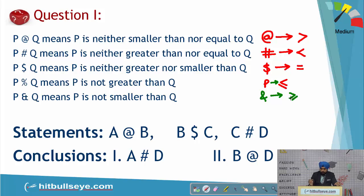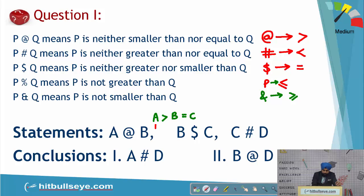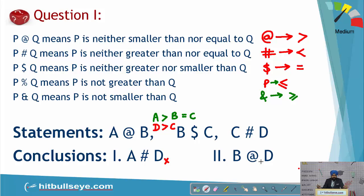Now let's solve it. A @ B implies A is equal to B. B $ C means B is equal to C. Then C is less than D, which we rewrite as D is greater than C, keeping symbols on the same side. Checking option one: A # D means A is less than D — but we can't confirm this. Checking option two: B @ D means B is greater than D — but B is actually smaller. Both one and two are wrong, so the answer becomes the fourth option: neither one nor two is right.